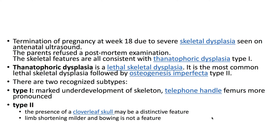There are two recognized subtypes. Type 1 is marked by underdevelopment of the skeleton and telephone-handle femurs, more pronounced. Type 2 features the presence of a cloverleaf skull as the distinctive feature, with limb shortening that is milder, and bowing is not a feature.